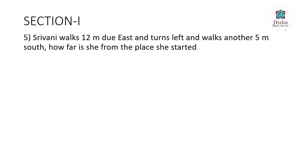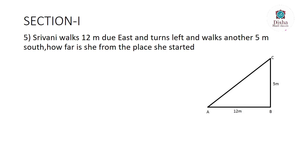Srivani walks 12 meters due east, then turns left and walks another 5 meters. How far is she from the place she started? Srivani walks 12 meters east, then turns left — that is, towards the south — and walks 5 more meters, reaching the ending point. We label three points: A to B is 12 meters east, B to C is 5 meters south, and we need to find the distance from A to C.